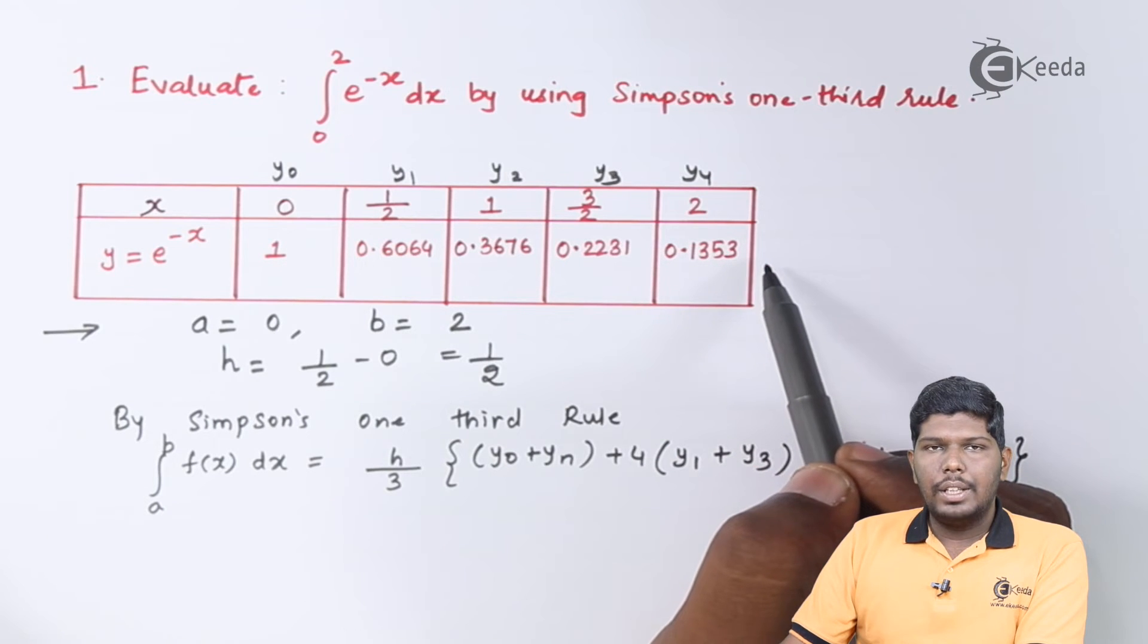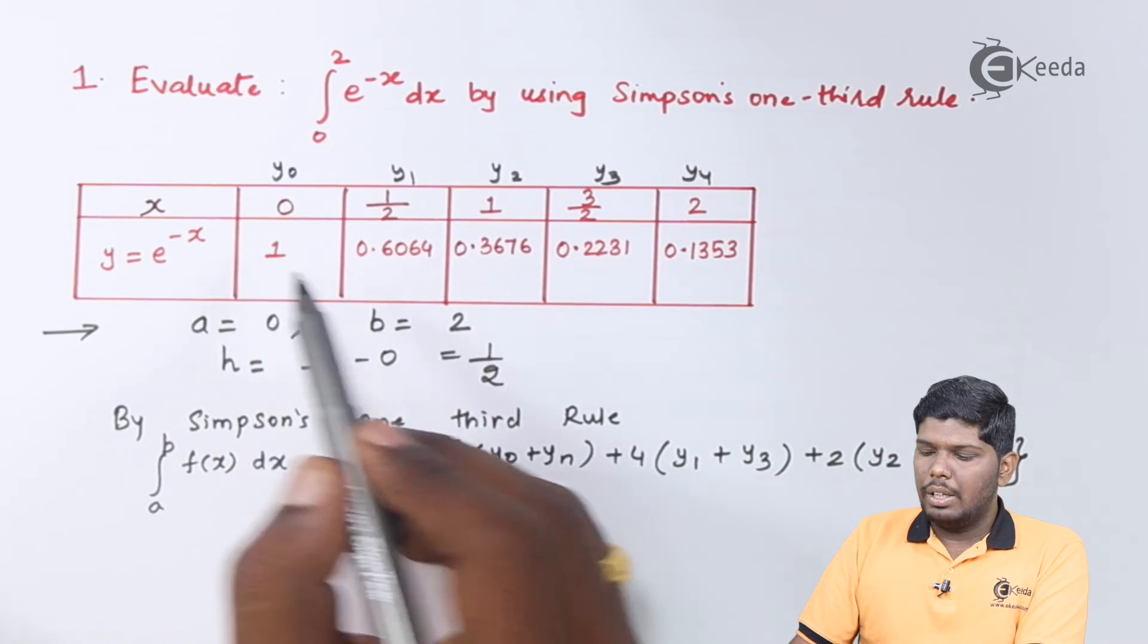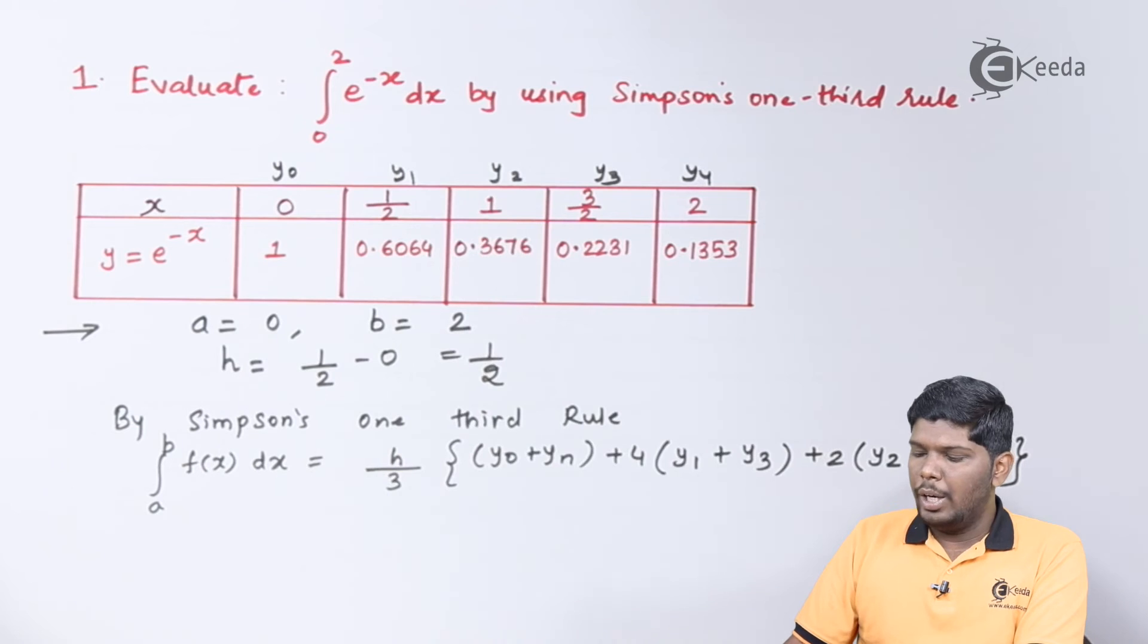Then again 0.1353 is odd position. But whenever you write the odd terms, make sure that you don't write the first and the last term. So the remaining odd position will be nothing but y₂ only. Here we are not going to consider y₄.